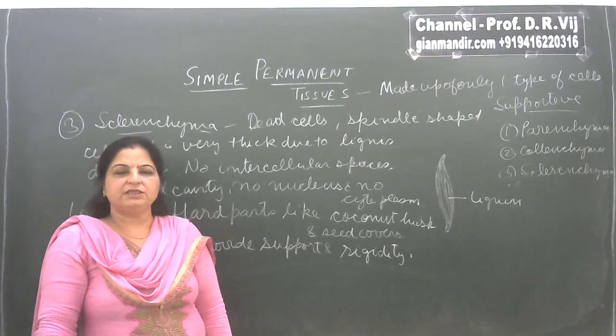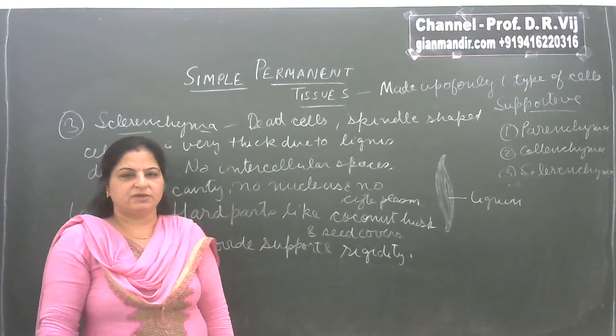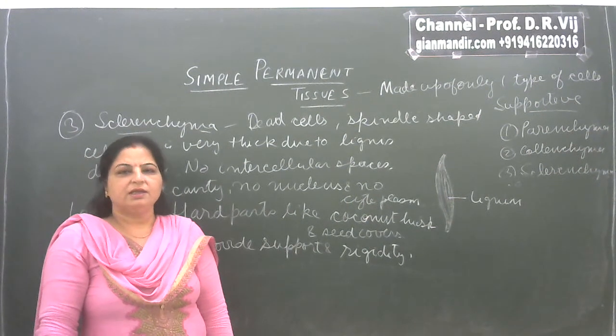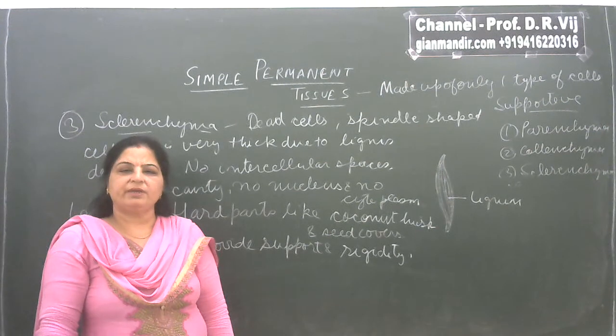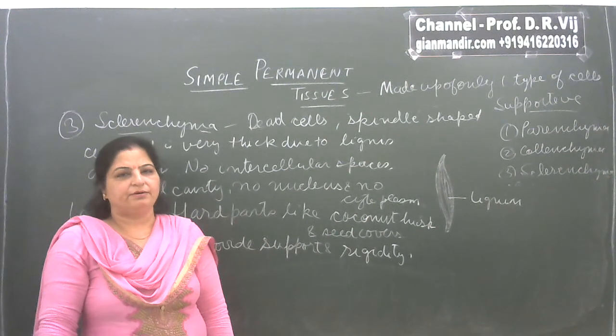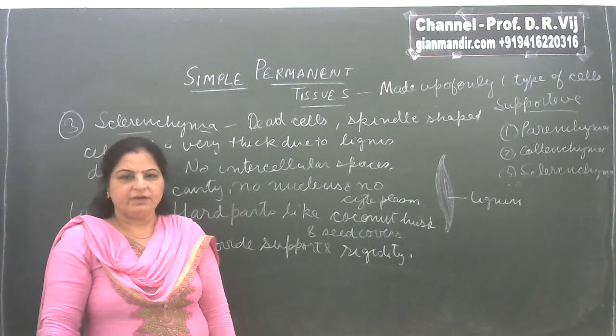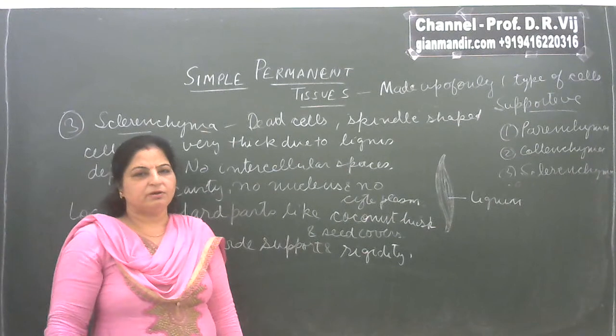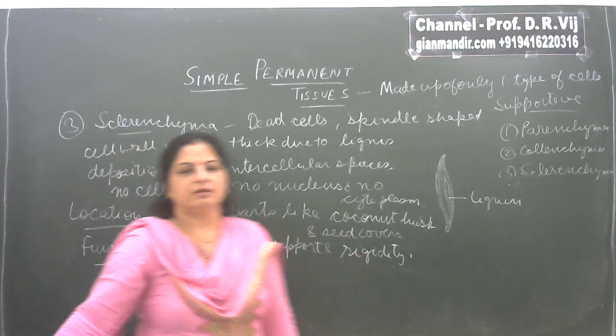So that is all about the supportive type of simple permanent tissues: parenchyma, colenchyma, and sclerenchyma. In our next lecture, we will be discussing about the protective type of simple permanent tissues, which are epidermis and cork. Have a nice time, goodbye till then.